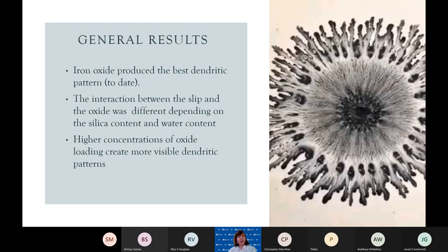General results. As for right now, iron oxide has shown to develop the best and most detailed patterns — not only dark, but also clear in the random walk effect. The slip and oxide interaction also depended on silica content and water content. Online, it was said that the clay slip must have the viscosity of around 1030 water-oil. However, we did not have a viscometer, so we had to change the water and silica content to change the viscosity. The most optimal slip generally follows the rule of not being too thin and not being too thick. Finally, higher concentration of oxide loading created more visible patterns.